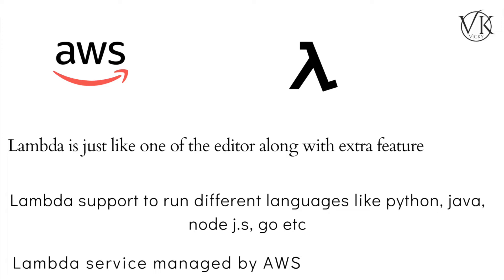Lambda supports different kinds of languages like Python, Java, Node.js, and Go, and it is a fully managed service by AWS. When I say fully managed service, whenever I need to run code from my local machine I need to install PyCharm or Visual Studio and also install the required libraries. With Lambda I don't need to install any libraries — it is already installed and managed by AWS. It runs on a Linux server with the libraries already installed.